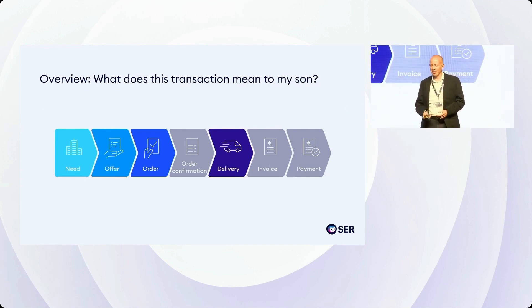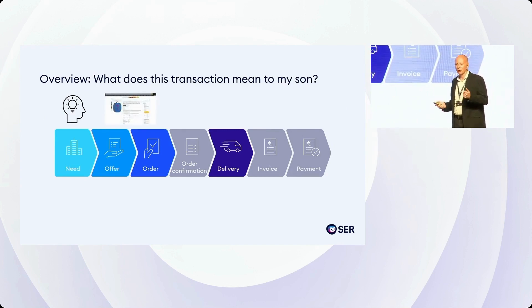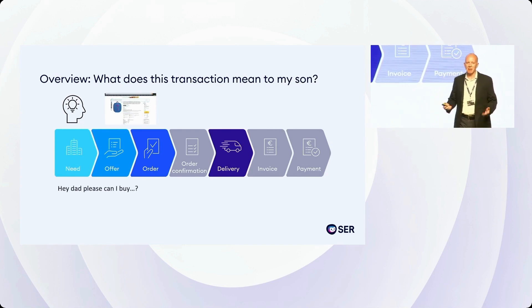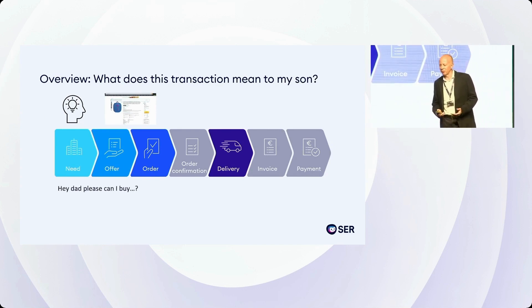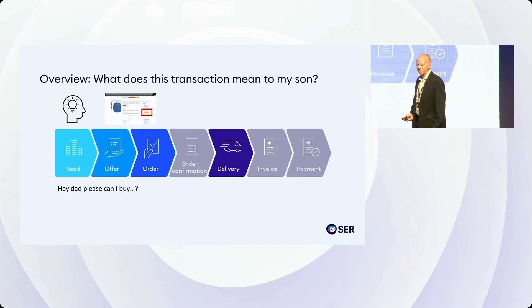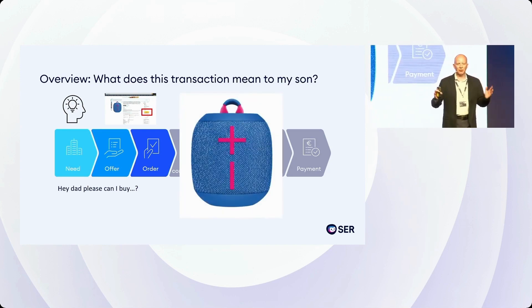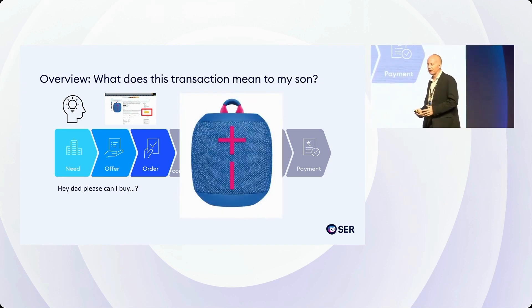But what does my son think purchase to pay is all about? I've got the map, the schema there. There's always the need. He looks at the website. Usually, thank goodness, because he's pretty well behaved, he asks me can I buy something. He then places the order and he's impatient for delivery. Thank God for Amazon Prime — it's the best 100 euros I spend every year.